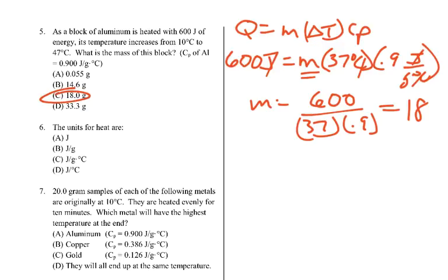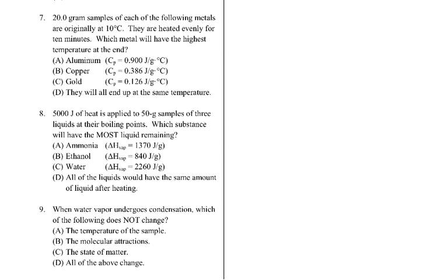Number 6: the units for heat are joules. Number 7: a 20-gram sample of each metal is heated evenly for 10 minutes — which metal has the highest temperature at the end? C_P tells you how much something resists change in temperature. With equal amounts heated equally, the one that resists the least — the one with the smallest C_P, which is gold — will reach the highest temperature.